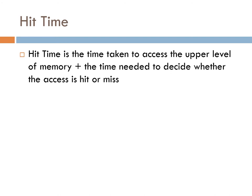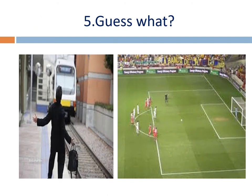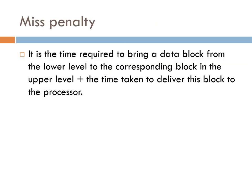If the data is not available in cache memory, I will go to main memory. The additional time needed is called miss penalty time or miss time. So now you can see it is like miss penalty. Miss penalty is the additional time needed to fetch data to that particular stage. Suppose the information is not available in cache memory — we get the data from main memory to cache memory, and the additional time taken to get that particular data is the miss penalty.